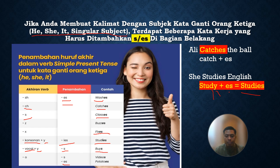Contohnya: 'Ali catches the ball' — catch ditambah ES. Kemudian 'She studies English' — study berubah menjadi studies karena ada huruf konsonan D sebelum Y. Jadi itu aturan-aturan dalam menulis kata kerja, dan ingat hanya berlaku apabila subjeknya orang kata ganti ketiga — He, she, it — ataupun nama orang yang hanya terdiri dari satu orang, dan apabila menggunakan simple present tense.